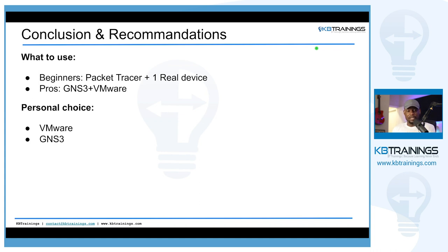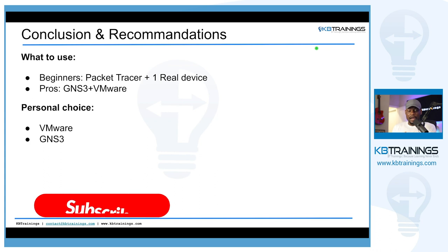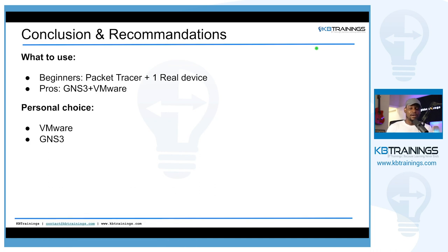My personal choice is VMware and GNS3, but it doesn't really matter what you use to practice. The bottom line is to keep practicing and do it a lot — that's how you improve. You can use anything: Boson NetSim, Packet Tracer, it doesn't matter. Just be into it and do it all the time. Thank you for watching — this is GI with KB Trainings. I'll create in-depth videos on Packet Tracer, GNS3, and VMware. Check out kbtrainings.com — there's a free CCNA course available at kbtrainings.com/ccna. Enroll now and you'll keep access even if it becomes paid.